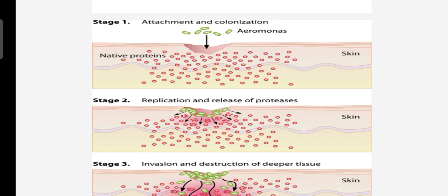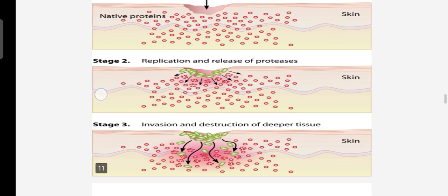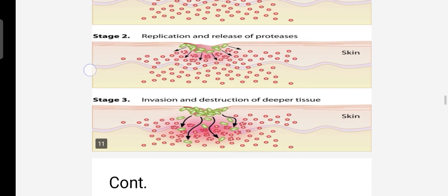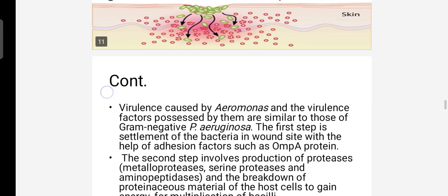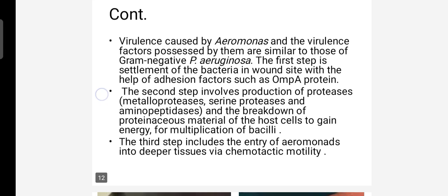Aeromonas attacks the skin, degrades the native proteins — denaturing them — releasing energy and replicating into deeper tissue causing destruction. The first step is the settlement of bacteria on the host site with the help of virulence factors such as OmpA protein.